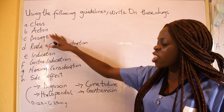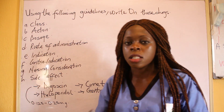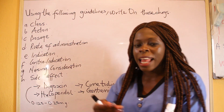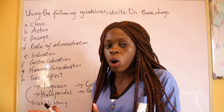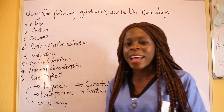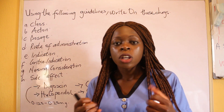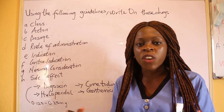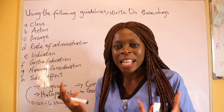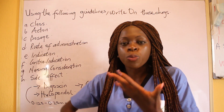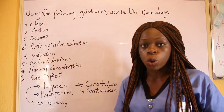Then you get to the action. You have no idea about the action, because the fact is, when you don't know the class of the drug, you don't know the action of the drug. But generally, digoxin helps to treat heart failure — it helps to increase the contractility of the heart so that the heart will be able to pump blood. That's what it usually does.